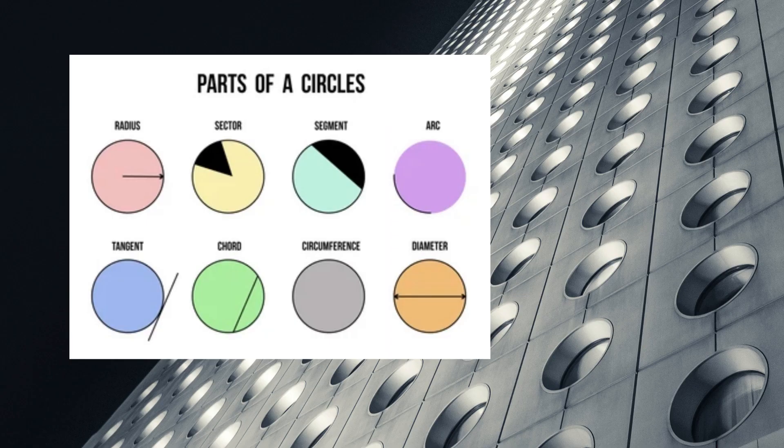What are the parts of a circle? A circle have radius, sector, segment, arc, tangent, chord, circumference and diameter. Let's get more detail about the parts of a circle.